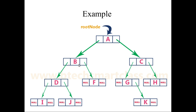Again, this is the doubly linked list which stores the left and right child addresses. D is also having 2 children, but I and J do not have any children, so there is no left child and no right child — these addresses are given as null. Similarly for node F. C is having left and right child. G does not have any left subtree, so it is null. H does not have any left or right subtree, so both have been given as null.